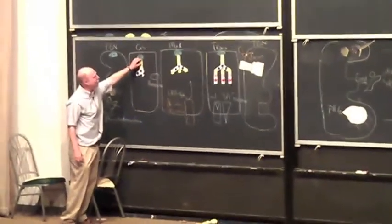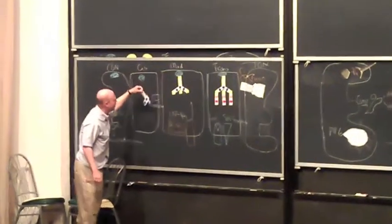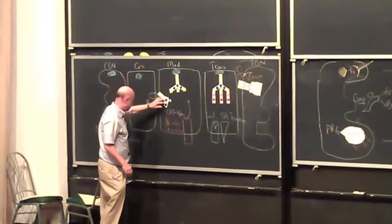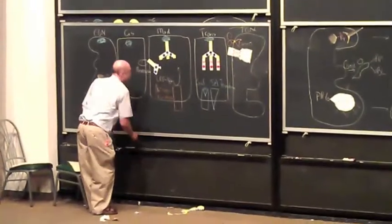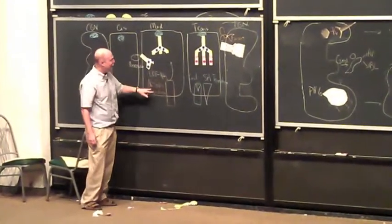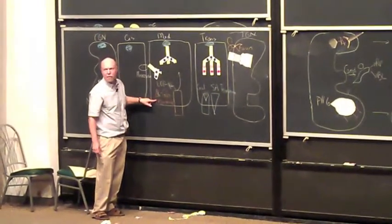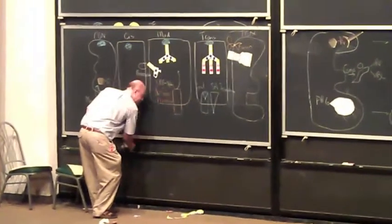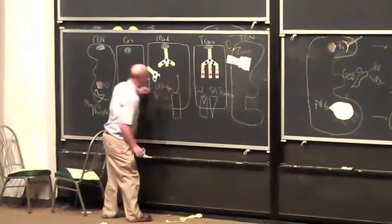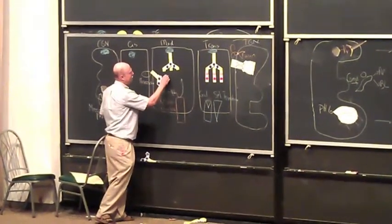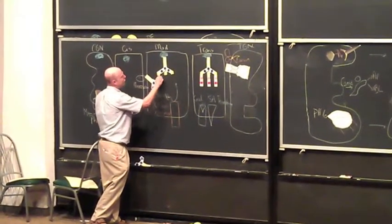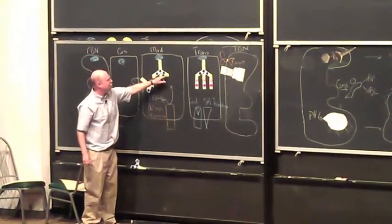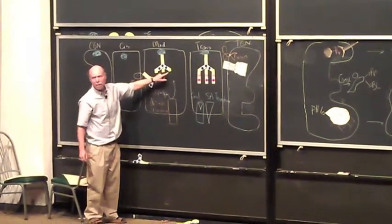Then the protein will make its way into the medial Golgi. And in the medial Golgi, it will be acted on by an enzyme that's a glycosyl transferase. And it transfers N-acetylglucosamine to this chain. And actually, it'll eventually put three of them normally on this chain.